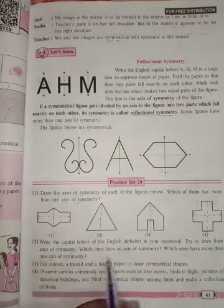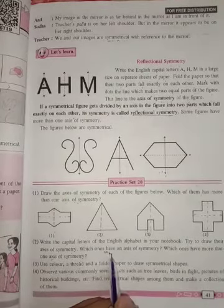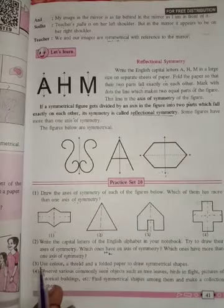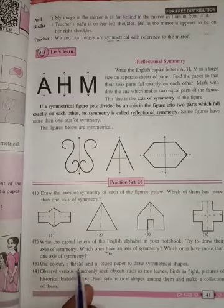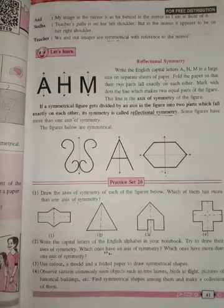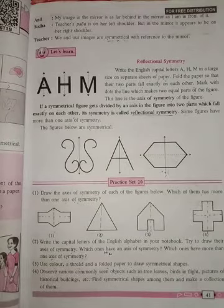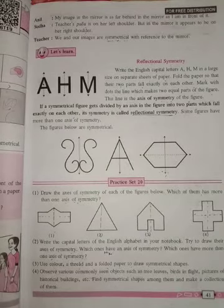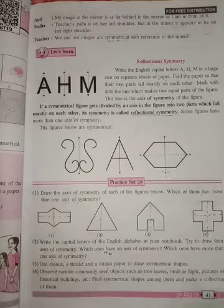Number 3 is: use color, a thread, and a folded paper to draw symmetrical shapes. Apply color, fold the paper, and open it - the axis of symmetry is ready. So number 3 is also homework for you.